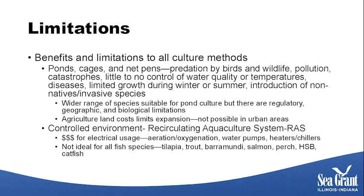RAS systems are much more expensive than ponds and cage culture because we're circulating water with electricity, plus electrical usage for aeration, oxygenation, and heating or chilling the water. Not all species are suitable for RAS systems — tilapia, trout, barramundi, salmon, yellow perch, hybrid striped bass, and catfish are used in RAS systems. Hybrid striped bass is a cross between a female white bass and a male striped bass. These fish have been around for about 30 years and are predominantly grown in cages but also work really well in RAS systems.